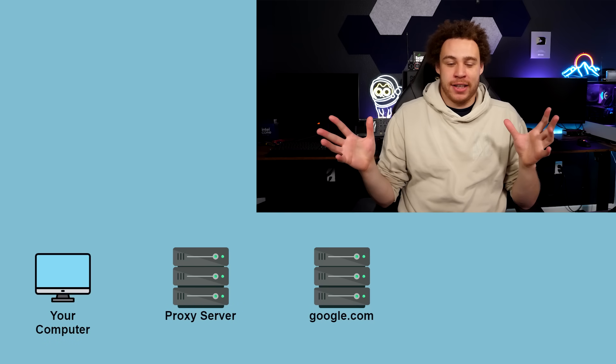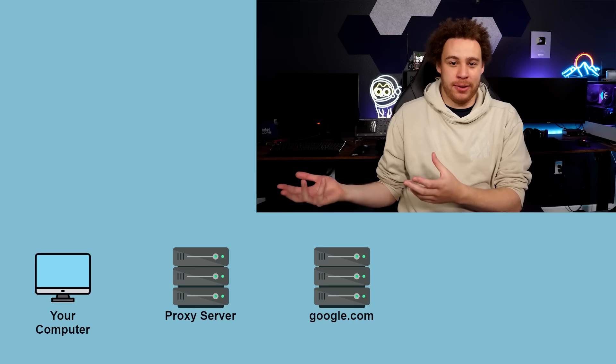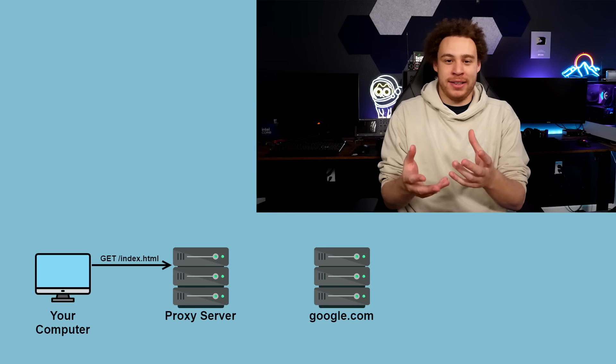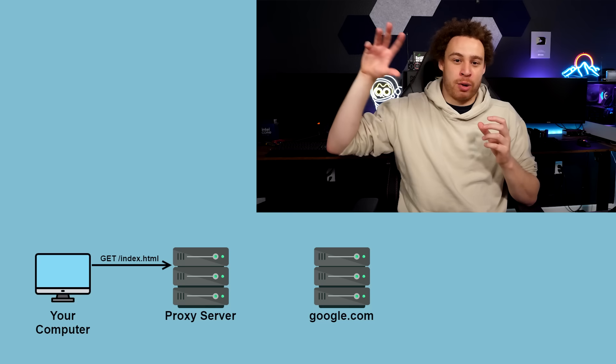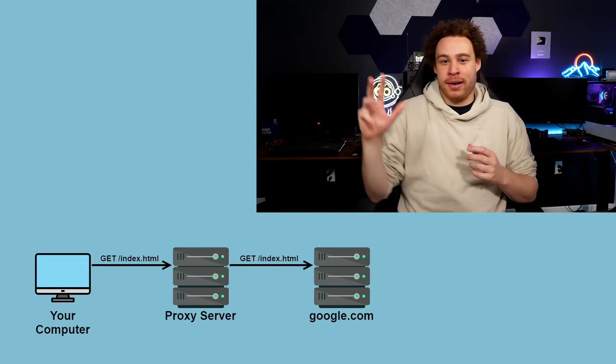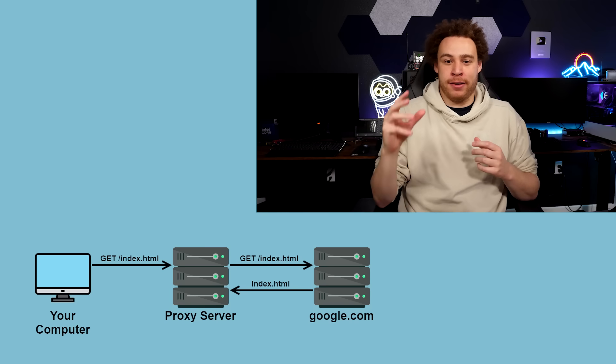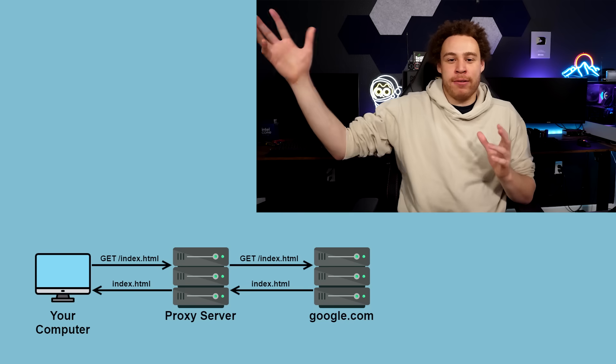So security vendors started just blocking those IP addresses. The bulletproof hosters needed a solution, and that solution was using more IP addresses. But IP addresses are hard to get, and changing your server IP address every day isn't easy. So what they started doing was hiding their servers using something known as a reverse proxy. With a reverse proxy, you connect to the proxy server, it forwards your request to the real server, the real server replies to the proxy, and the proxy forwards that response back to you — it's a layer of abstraction.